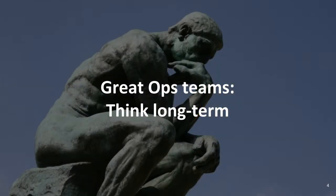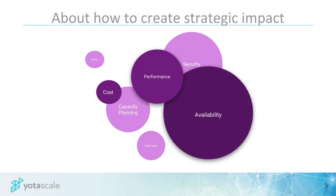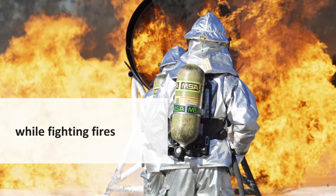What do great ops teams do? Great ops teams think long term — they're thinking strategically. They have a lot of things to keep in mind: availability, performance, costs, capacity planning. There's always the issue at hand — critical pages and alerts you have to deal with. So you have to balance the strategic and the tactical.